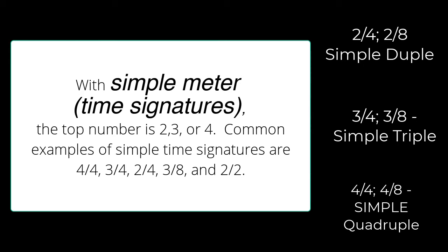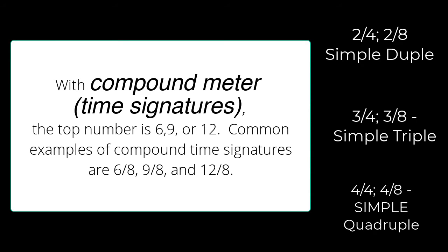It's quite simple. Simple meter is when the top number of the time signature is 2, 3, or 4. Does that sound simple enough? And if it's compound, the top numbers will be 6, 9, or 12. Sound good?